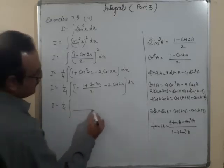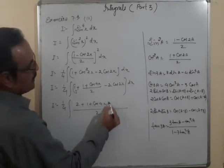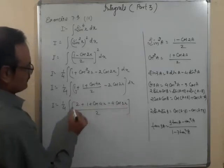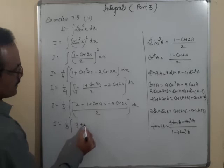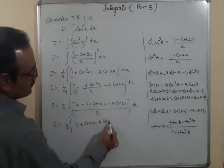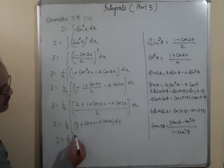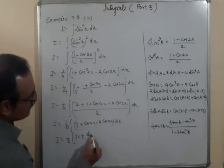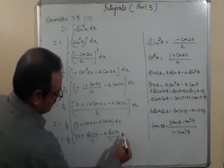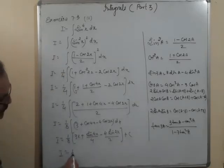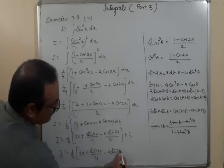Replace cos²2x = (1 + cos4x)/2. Taking LCM: I = (1/4)∫[(2 + 1 + cos4x − 4cos2x)/2] dx = (1/8)∫(3 + cos4x − 4cos2x) dx. Integrating: I = (1/8)[3x + sin4x/4 − 2sin2x] + C.